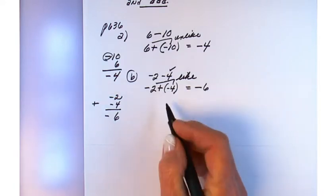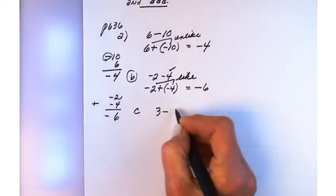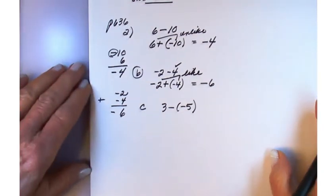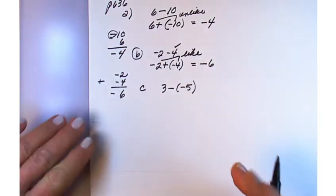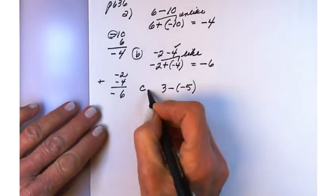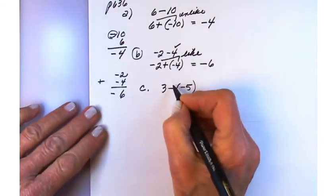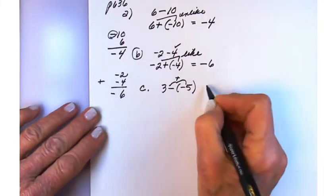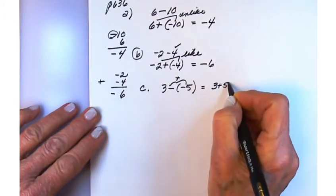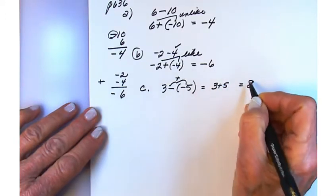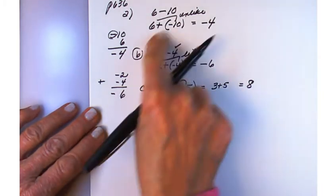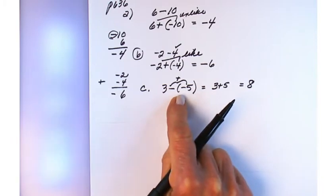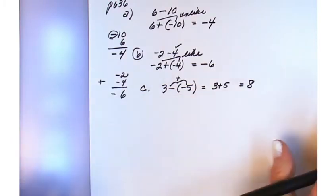Example c: 3 minus negative 5. Most of you use the double negative rule — two consecutive minus signs become a plus. So we now have 3 plus 5, and our sum is 8. I can go through the full process, but the double negative rule gets you there directly.